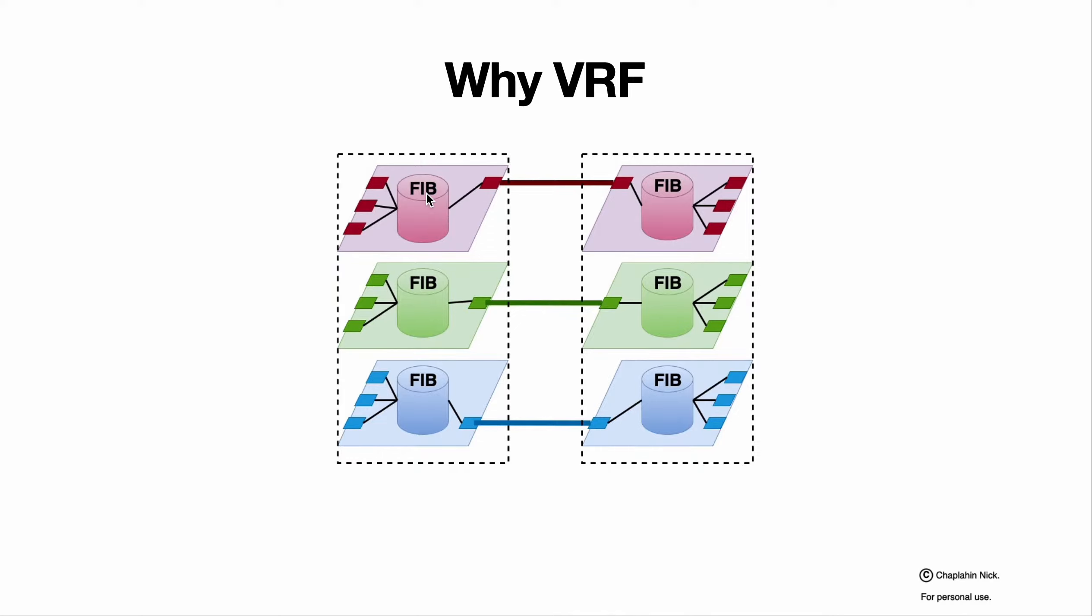This routing table knows only about L3 interfaces that are part of this VRF, has only routes that can pass those VRFs next hops, and this is how isolation is done.